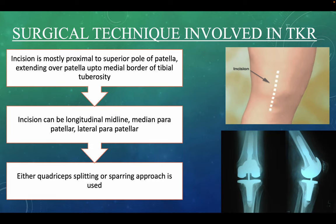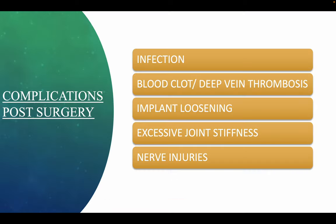Regarding the surgical technique, the incision is mostly proximal to the superior pole of the patella, extending over the patella up to the medial border of the tibial tuberosity. The incision can be a longitudinal midline, median parapatellar, or lateral parapatellar approach. Either a quadriceps-splitting or quadriceps-sparing approach is used.